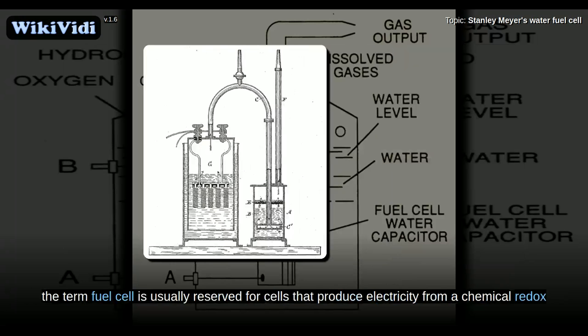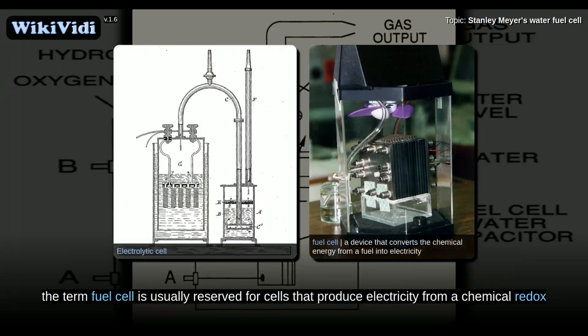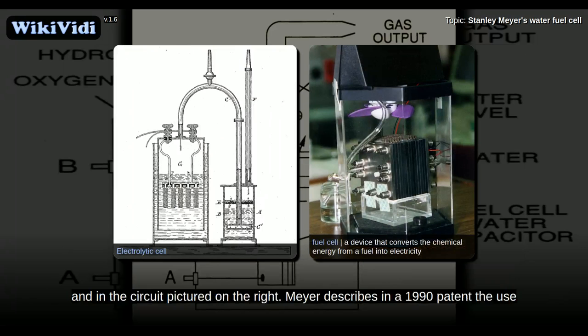Furthermore, the term fuel cell is usually reserved for cells that produce electricity from a chemical redox reaction, whereas Meyer's fuel cell consumed electricity, as shown in his patents and in the circuit pictured on the right.